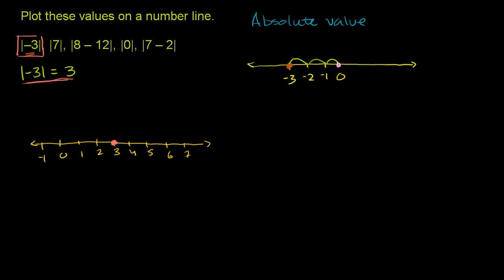Then this next value: the absolute value of 7. Looking at the number line, 7 is how far away from 0? It is 7 away from 0. So the absolute value of 7 is equal to 7. You can already see the pattern — if it's negative, it just becomes positive; if it's already positive, it just equals itself. So we plot the absolute value of 7 right at 7.